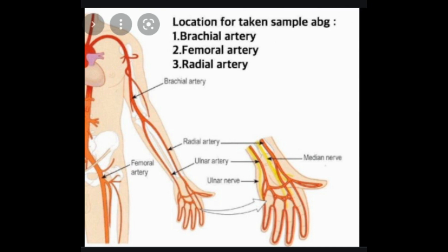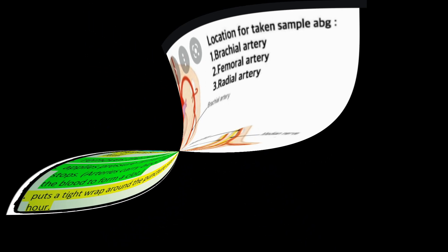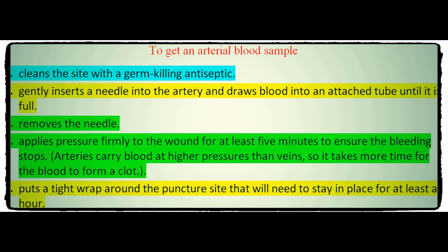This more complicated procedure is done by a practitioner trained to safely access arteries. Arterial blood is usually taken from the radial artery in the wrist — the major artery in line with the thumb where you can feel your pulse — or from the brachial artery in the elbow or the femoral artery in the groin. The practitioner cleans the site with an antiseptic, gently inserts a needle into the artery, and draws blood into an attached tube until it is full, then removes the needle.